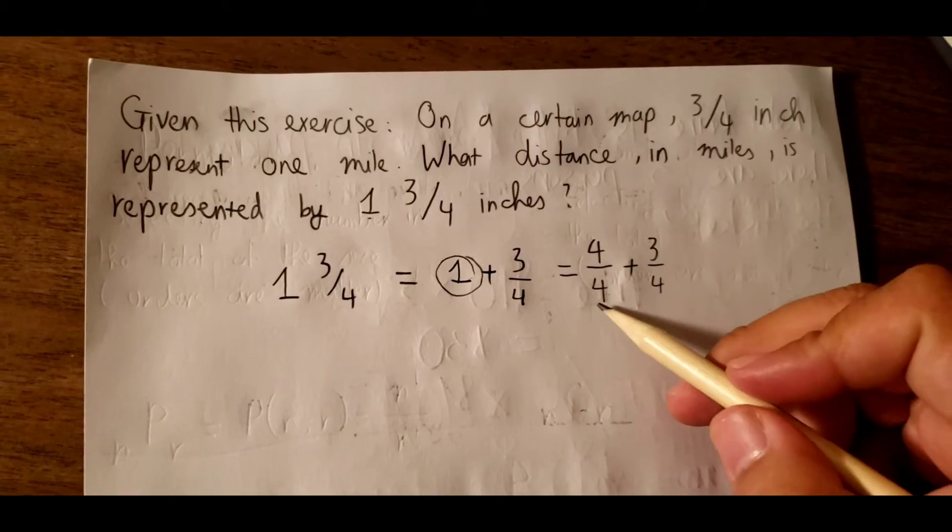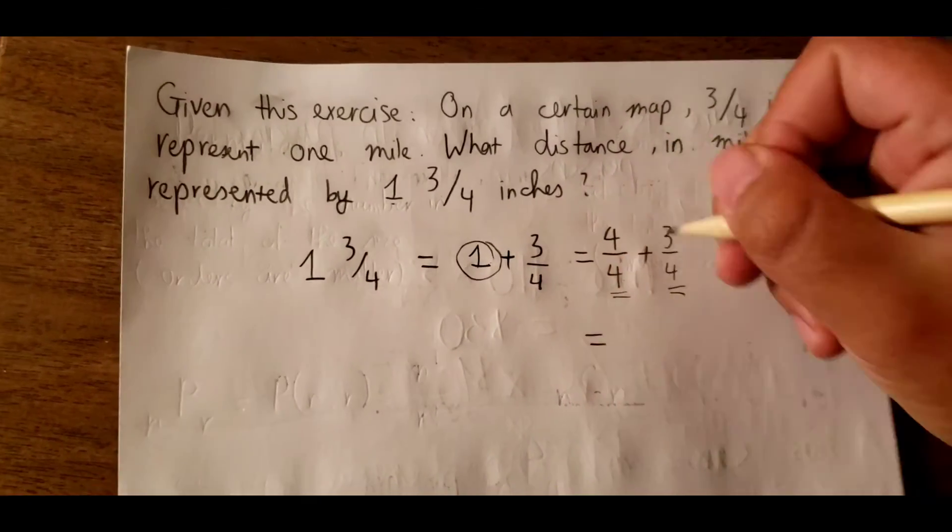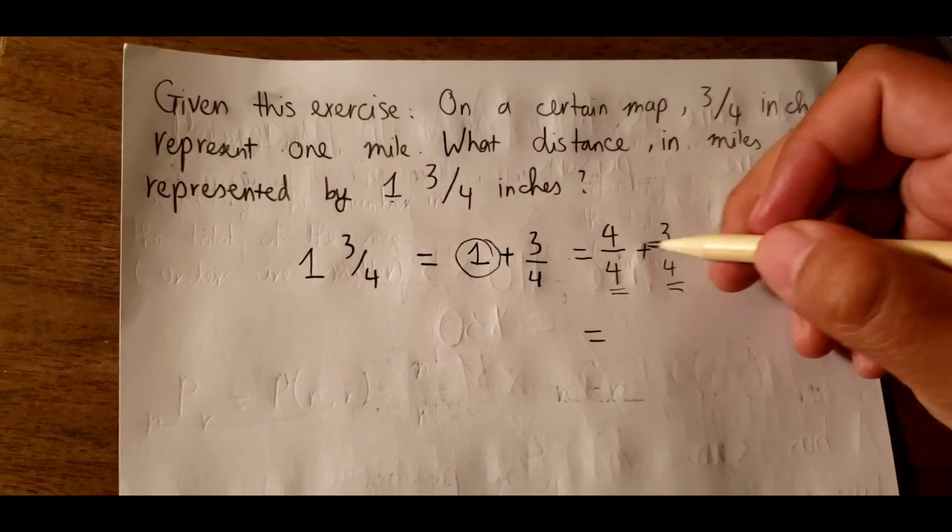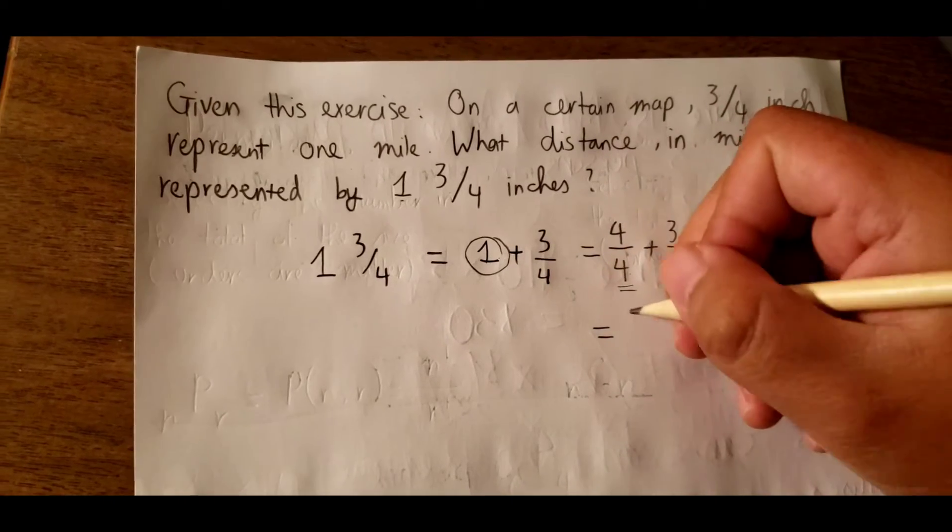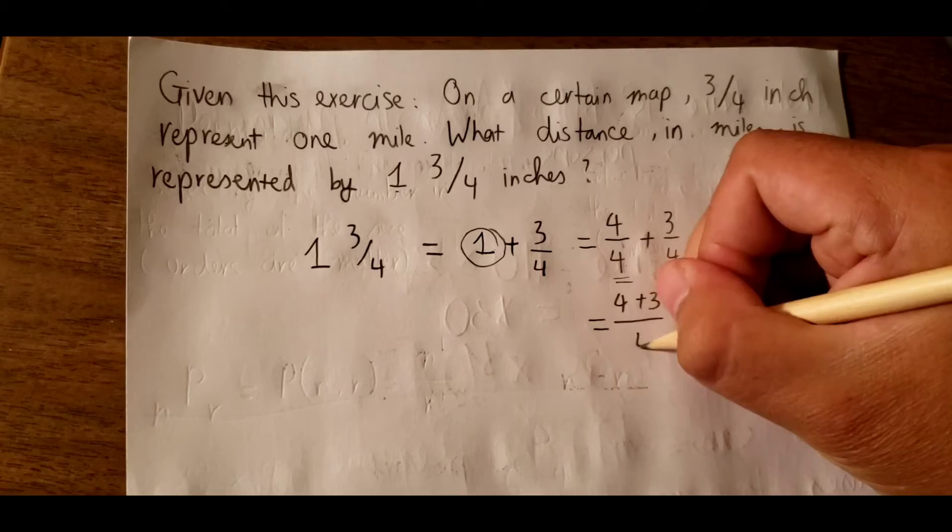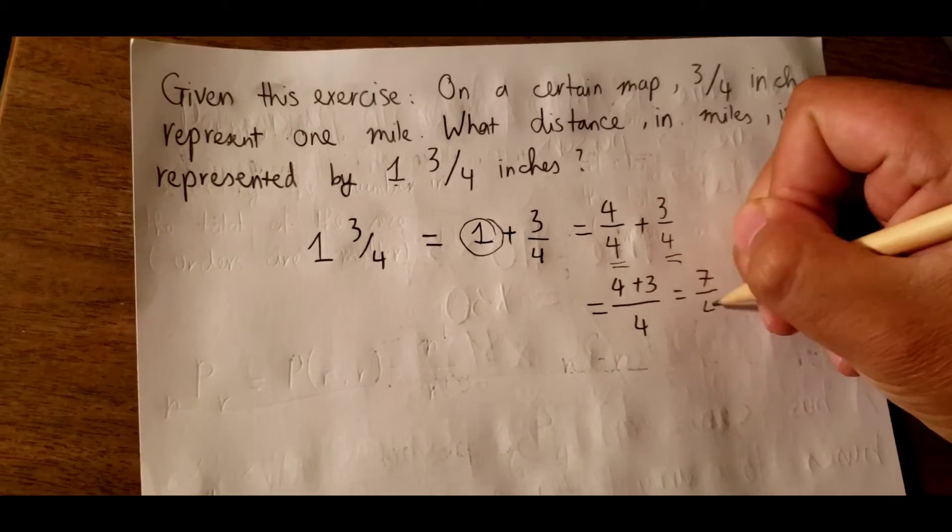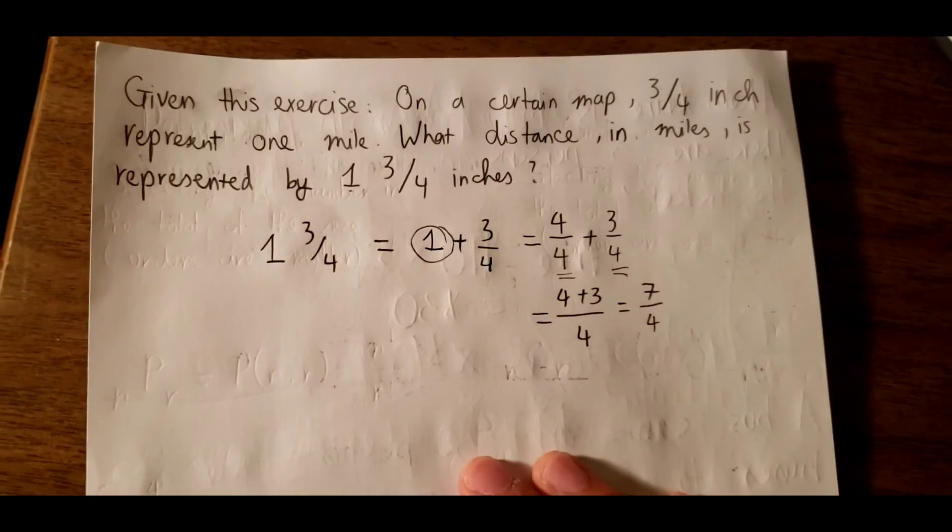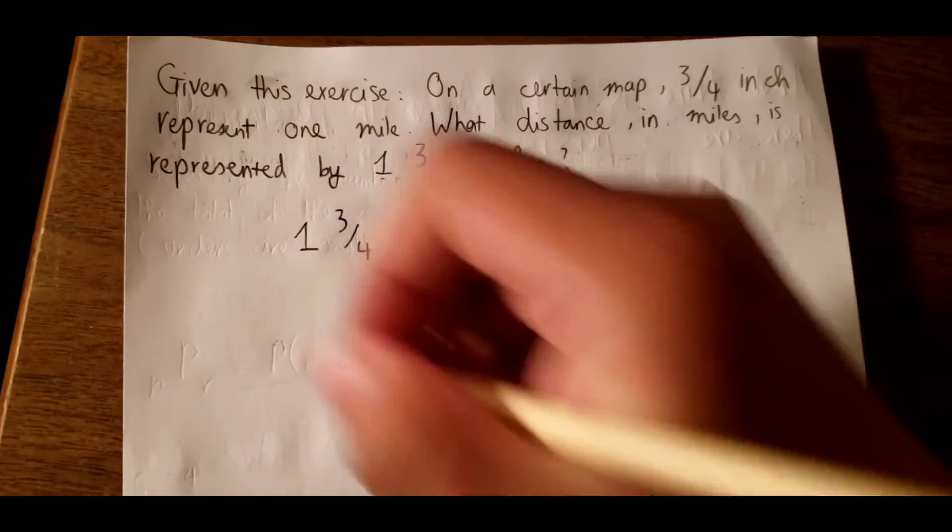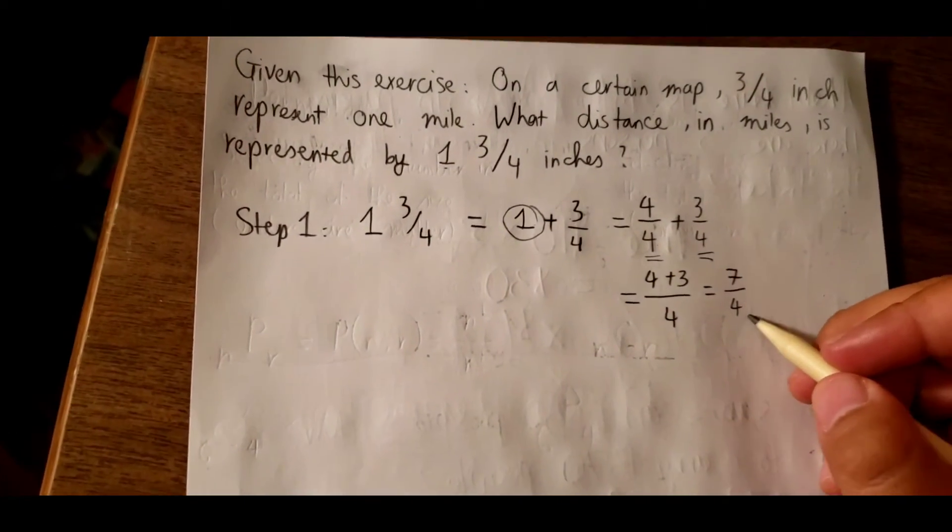We have a common denominator in here, so we can sum the two numbers together. That is 4 plus 3 divided by 4. We have 7 over 4. So that is the first step. Step number 1: we need to transform to improper fraction.